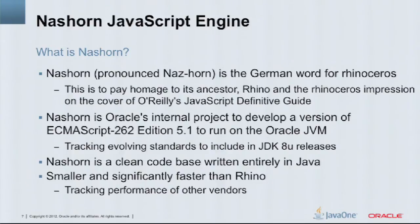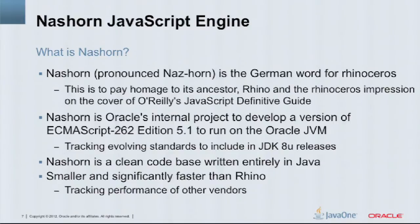NASHORN is a clean source base — it doesn't take anything from Rhino; it started from scratch. It was primarily designed using JSR 292 as its main basis. It's much smaller and significantly faster than Rhino, and we're tracking the performance of other vendors so that we get ourselves up to the same level as what you're seeing in some browsers.